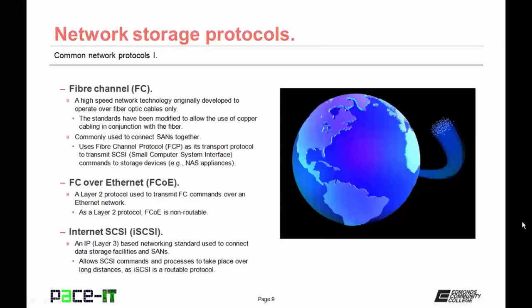Fiber channel is commonly used to connect storage area networks together. It uses fiber channel protocol, or FCP, as its transport layer protocol to transmit SCSI — Small Computer System Interface — commands to storage devices. Then we have FC over Ethernet, or FCoE — a layer 2 protocol used to transmit FC commands over an Ethernet network. As a layer 2 protocol, FCoE is non-routable. Finally, we have Internet SCSI, or iSCSI — an IP-based network standard used to connect data storage facilities and storage-attached networks. It is a layer 3 protocol that allows SCSI commands and processes to take place over long distance, as iSCSI is a routable protocol. That concludes this session on Common Network Protocols Part 1.